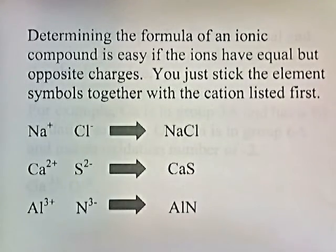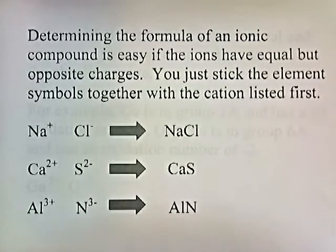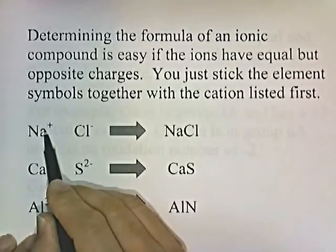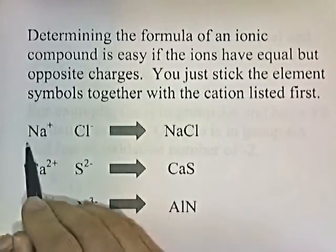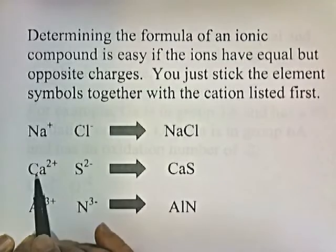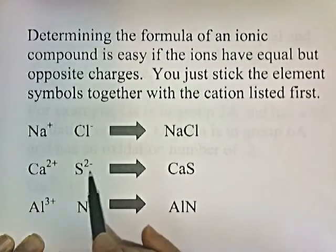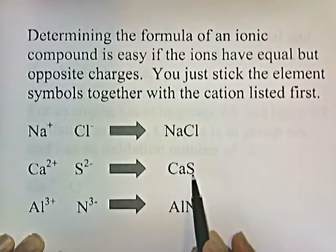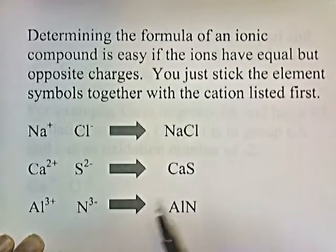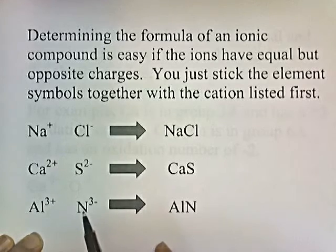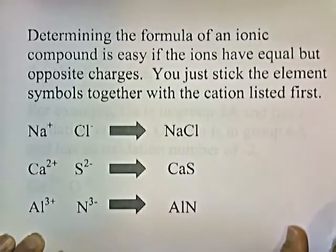Determining the formula of an ionic compound is easy if the ions have equal but opposite charges: you just stick the element symbols together with the cation listed first. For example: sodium plus one, chlorine negative one → NaCl; calcium plus two, sulfur negative two → CaS; aluminum plus three, nitrogen negative three → AlN.